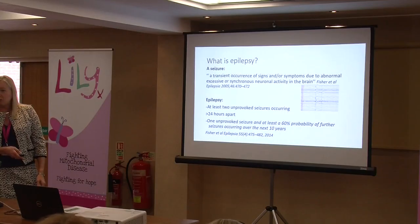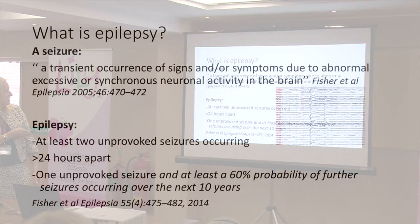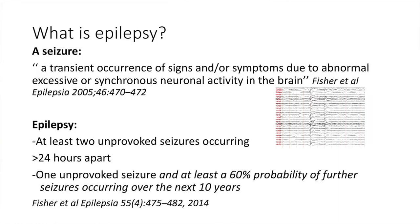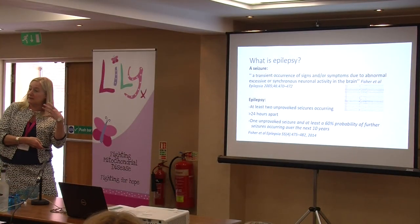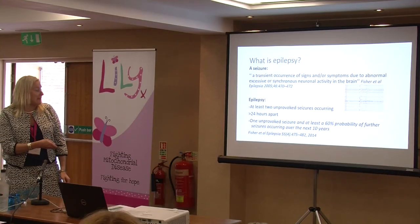What do we mean by epilepsy, and what is a seizure? A seizure essentially means there's a burst of synchronous electrical activity in the brain, which we can pick up on an EEG. Epilepsy is normally defined as at least two seizures occurring more than 24 hours apart, or one seizure with at least a 60% probability of a further seizure occurring over the next 10 years.